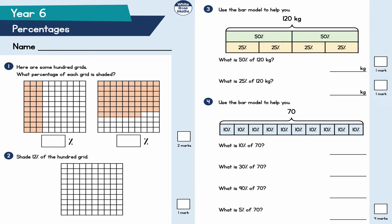We're going to start with question number one. Here are some hundred grids — what percentage of each grid is shaded? Here I've got one column of 10, another column of 10, and another column of 10, so 10 plus 10 plus 10 is 30 percent, because I've got 30 out of 100, and percentage means out of 100.